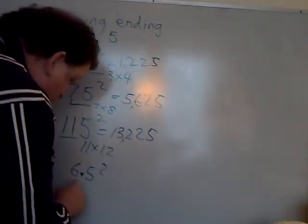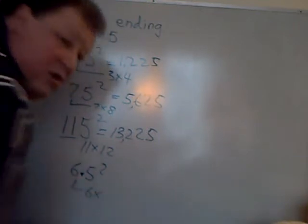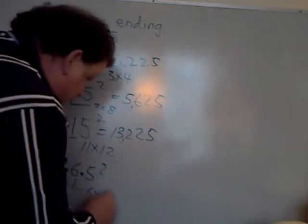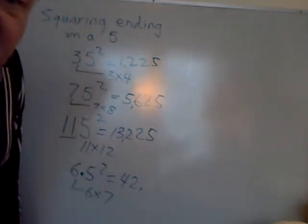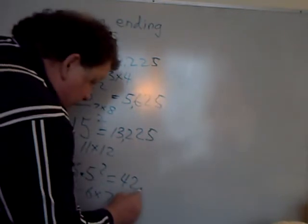If there's a decimal, just multiply 6 times the next highest number. That gives you 42, but this time attach 0.25 to it.